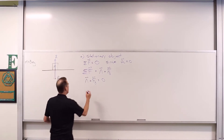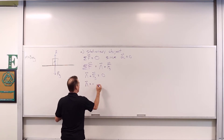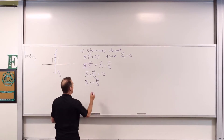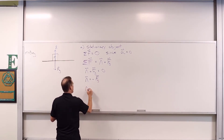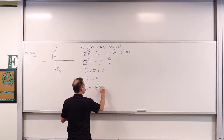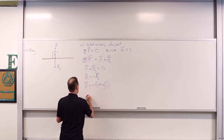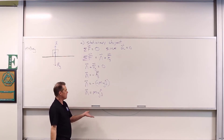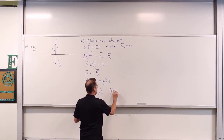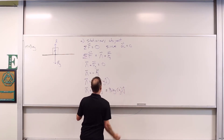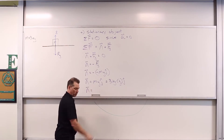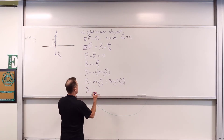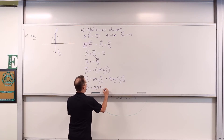We can go ahead and solve for N hat. N hat is equal to negative F sub G hat, and F sub G hat is negative mg J hat. So N hat equals negative times negative mg J hat, which gives us N hat equals mg J hat. We can quantify this: three kilograms times g in the J hat direction gives us 29.4 Newtons.